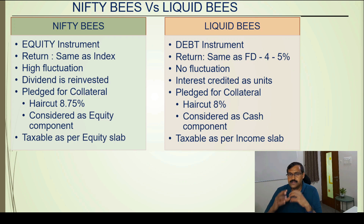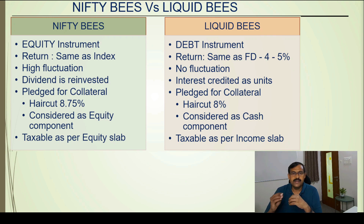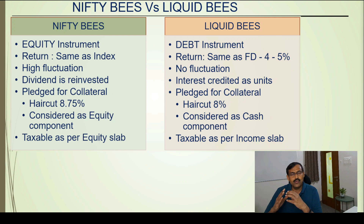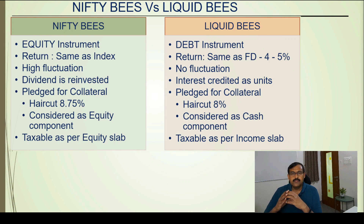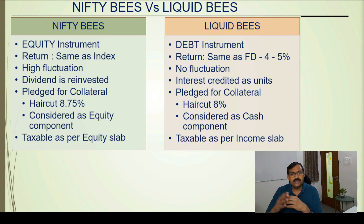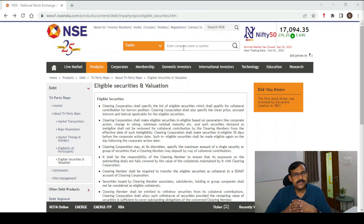The dividend earned from nifty bees — declared by nifty 50 stocks — is reinvested into the nifty bees, which is why the price of nifty bees is slightly higher compared to the nifty index itself. The interest earned from liquid bees is credited as units to your account. You can pledge nifty bees to get collateral margin for F&O trading; the haircut is 8.75% and it is considered the equity component. Liquid bees can also be pledged with an 8% haircut, considered as the cash component. For tax: nifty bees are taxed as equity (short-term and long-term gains), while liquid bees are taxed as per your income tax slab.